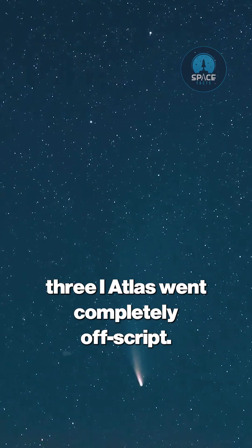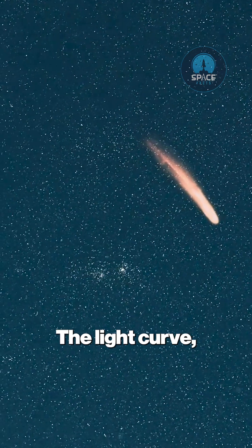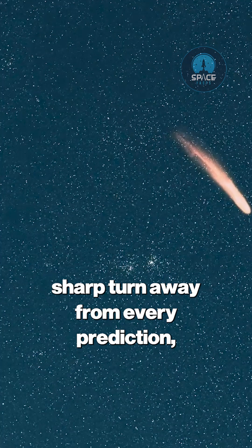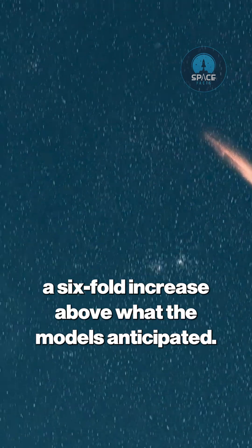Why is everyone scrambling to get a look at this thing? Because in September, 3I Atlas went completely off script. The light curve, the chart astronomers used to track brightness, took a sudden sharp turn away from every prediction—a six-fold increase above what the models anticipated.